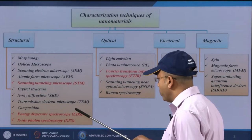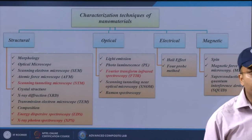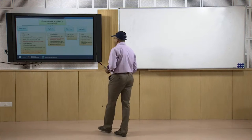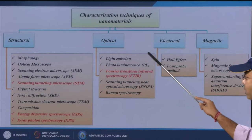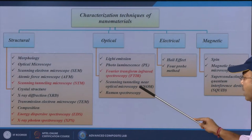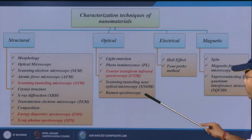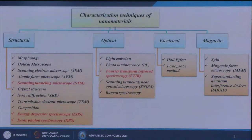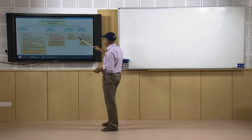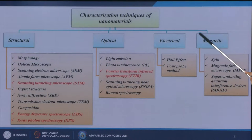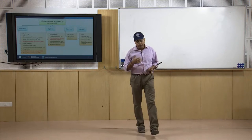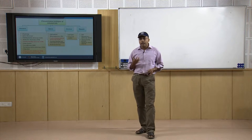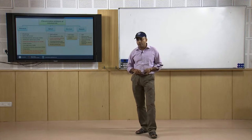Energy dispersive spectroscopy (EDS) and X-ray photoelectron spectroscopy (XPS) are used for compositional analysis. For optical properties we check through light emission, photoluminescence, Fourier transform infrared spectroscopy (FTIR), near-field optical microscopy, and Raman spectroscopy. For electrical properties we use the Hall effect method and four-probe method. For magnetic properties we use spin measurements, magnetic force microscopy, and superconducting quantum interference devices (SQUID). Depending on the application, the appropriate characterization technique is selected to measure properties from the coating surface or substrate.